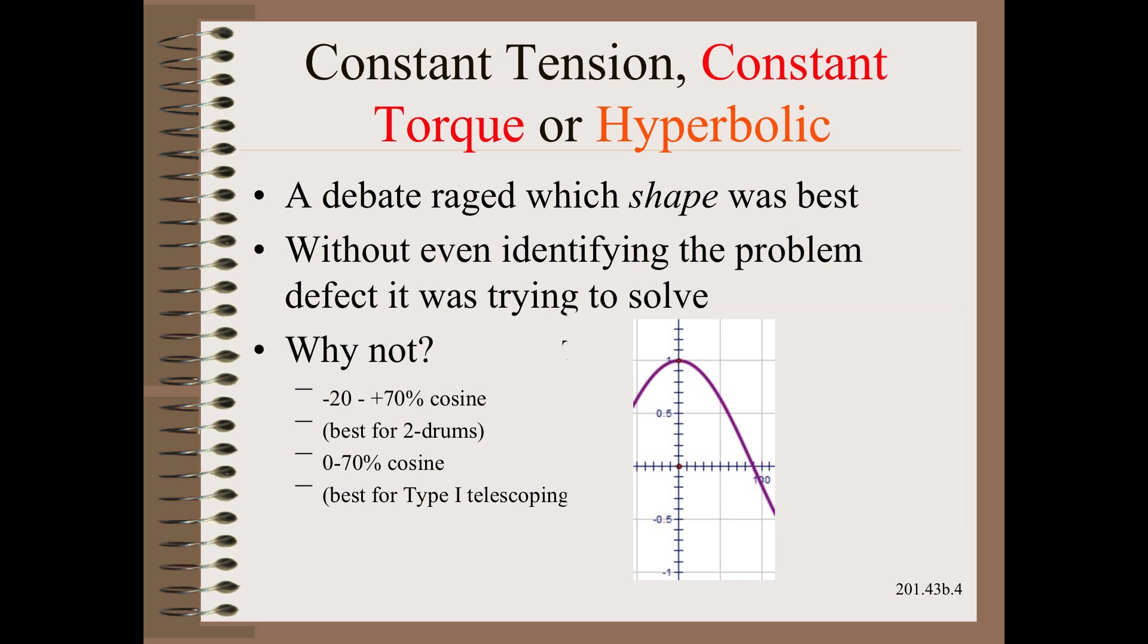Why not a minus 30 to plus 70 degree portion of a cosine curve? That, in fact, is close to the near optimum shape for a rider roll curve on a two-drum winder. Come to my winding class and find out why.